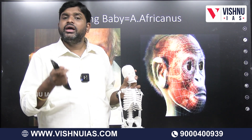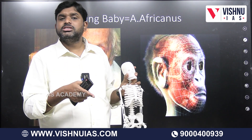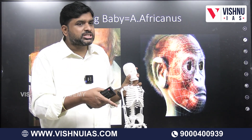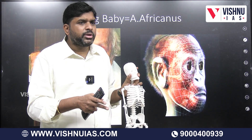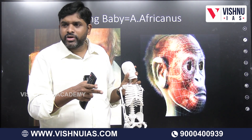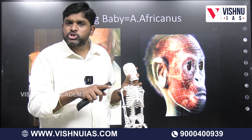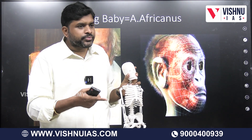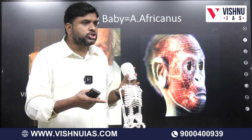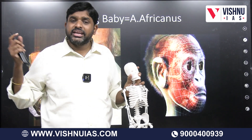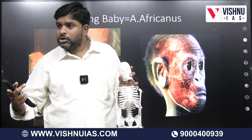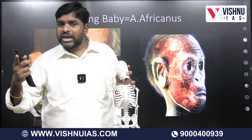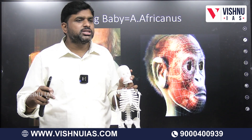In Australopithecines, we also have the Robustus variety, which is of two sub-varieties: one is Boisei and the other is Paranthropus Robustus. Then recently in 2005, we got another robust evidence which is called Aethiopicus.